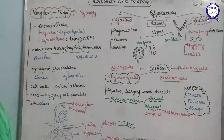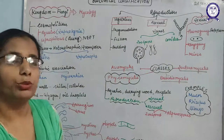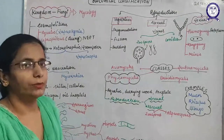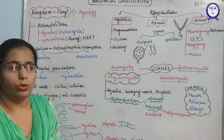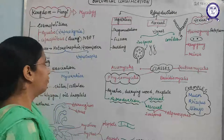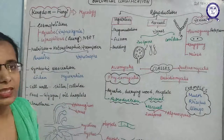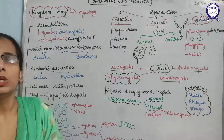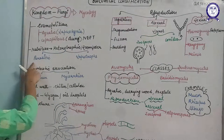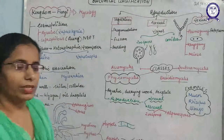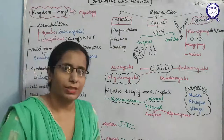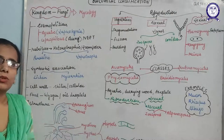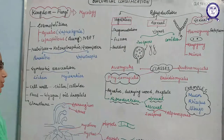After discussing habitat, what type of nutrition is followed by fungus? The main mode is heterotrophic nutrition — fungus cannot make its own food because they do not have chloroplasts. They mainly act as decomposers, breaking down complex substances into simple substances. They also follow parasitic nutrition and saprotrophic nutrition — taking food from dead and decaying matter by releasing enzymes that decompose complex organic substances into simple organic substances.